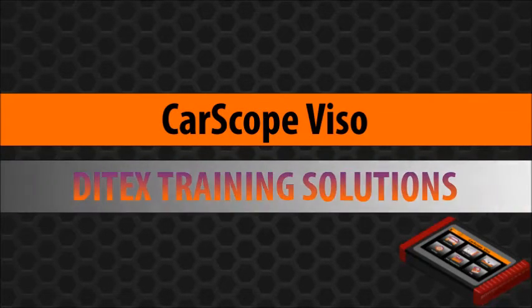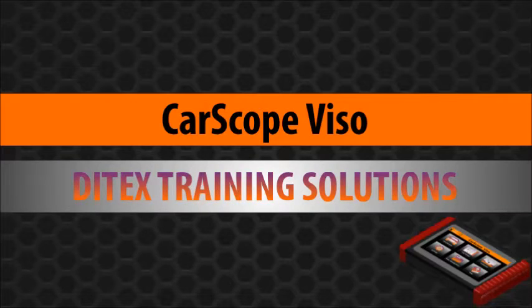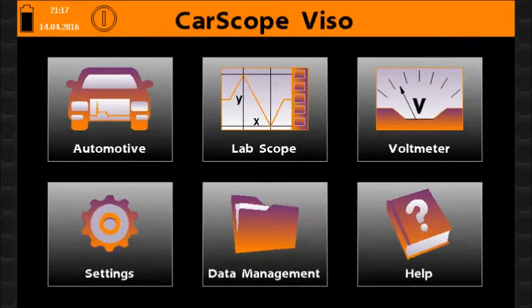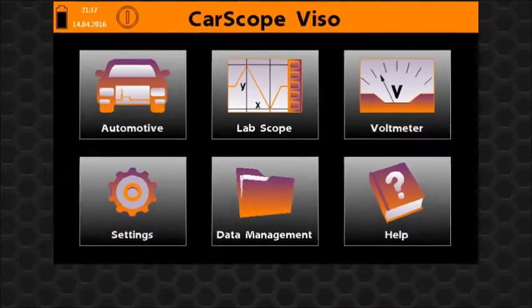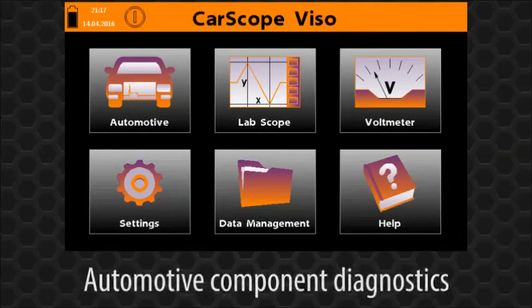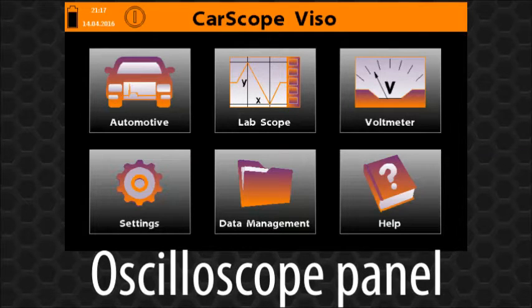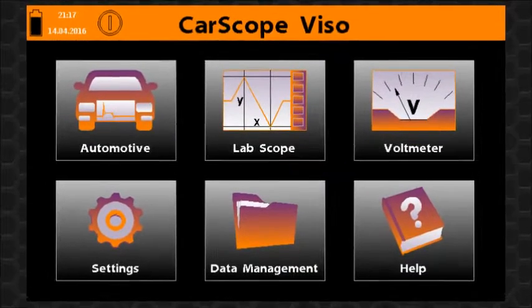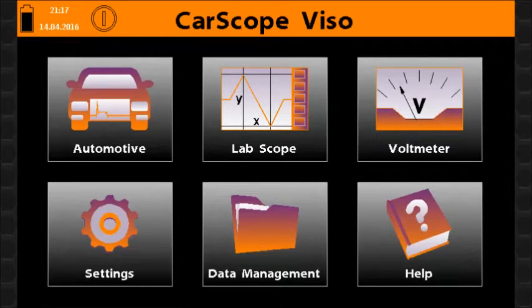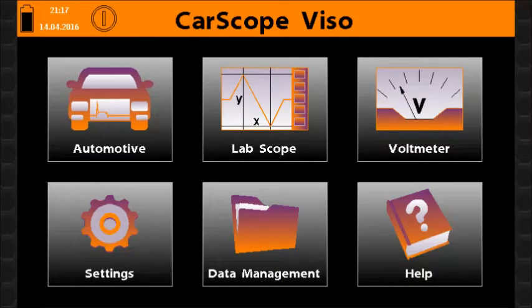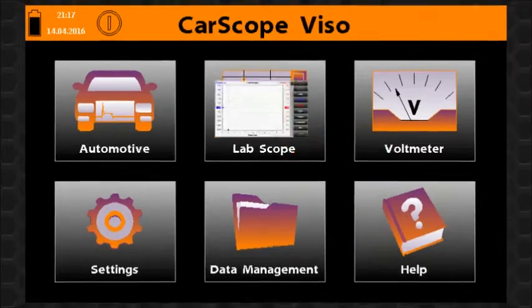Welcome to Ditec's training solutions. This training module is designed to help you in using CarScope Viso in automotive component diagnostics and covers the oscilloscope panel and its functions. The oscilloscope panel is common for both lab scope and automotive measurement functions.